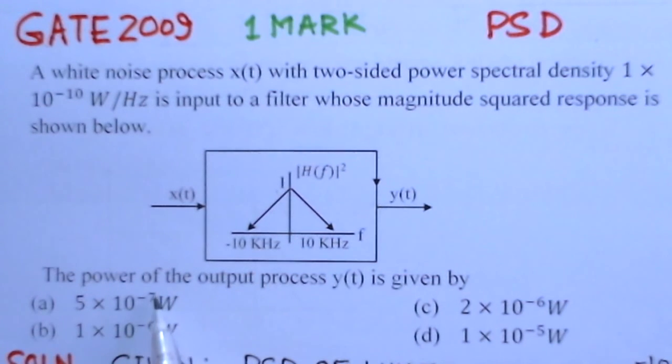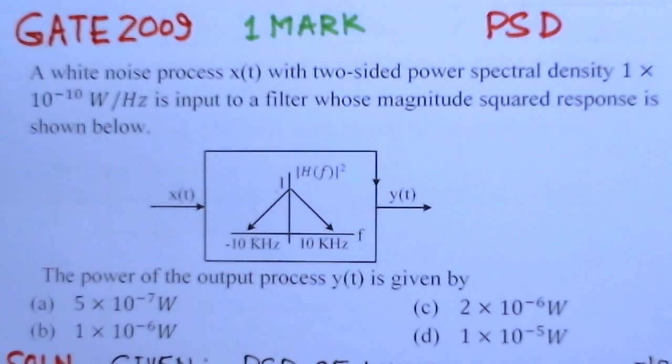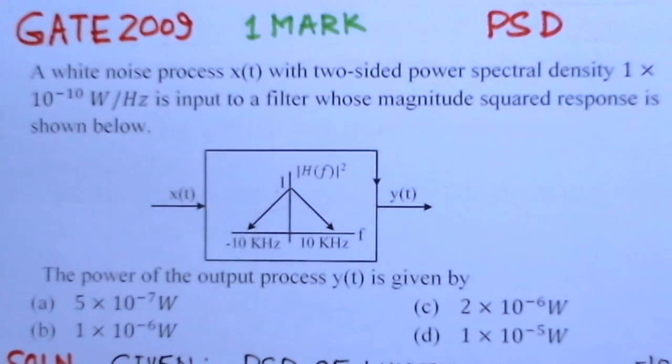So we have to find out the power of the output process y(t). There are four options for what is the power output at y(t) here at the output.